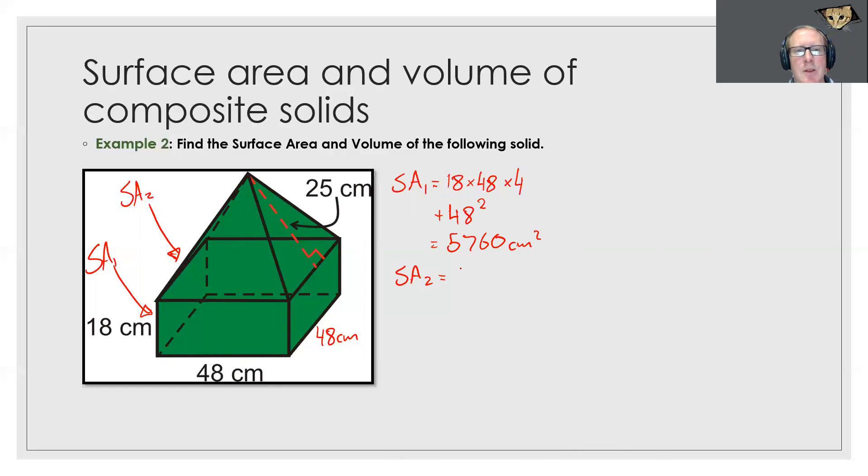Now to do the surface area of this pyramid, usually we would do 48 squared but we've already done that from the bottom of the whole shape. So now we just have to do our four triangles on the side which is 4 times ½ times base times height where this is my base and my height is labeled here.